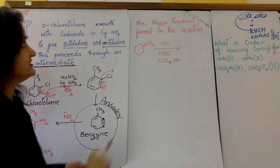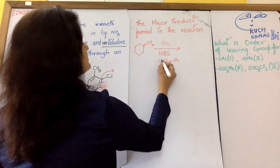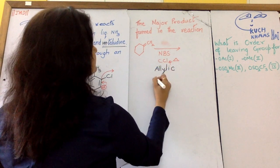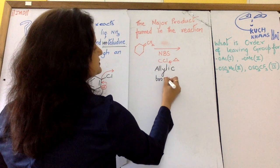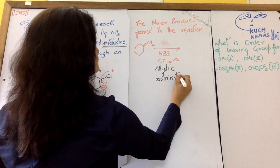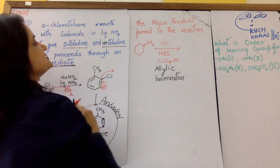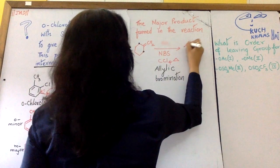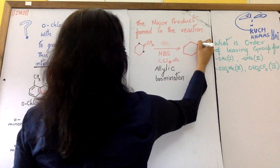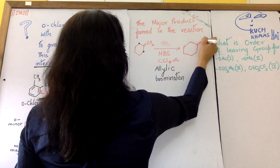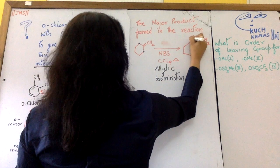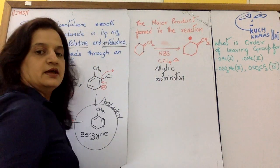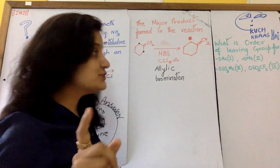Let us see this now. N-bromosuccinimide is for allylic bromination. So first thing which happens is at the allylic position a free radical is formed. It is a free radical mechanism. We have learned. This is how it is formed, either here or here. So anyone we have to make.